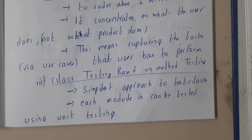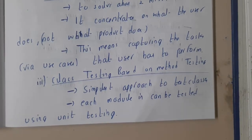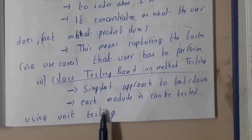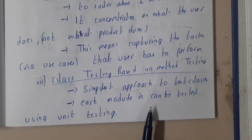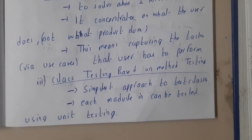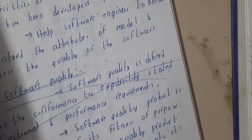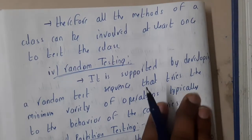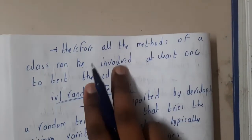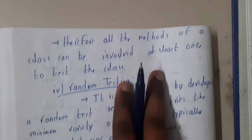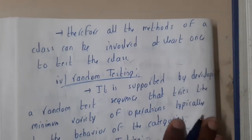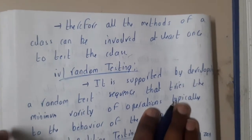The third method is class testing, based on method testing. This is a simple approach: each module in the class can be tested using unit testing — the same process we already use. Initially you test with unit testing, then combine and move on to other testing. Therefore, all the methods of the classes can be invoked at least once during class testing.